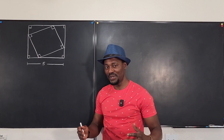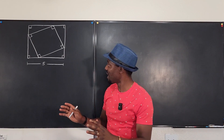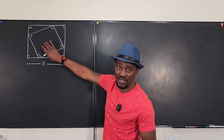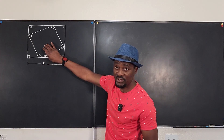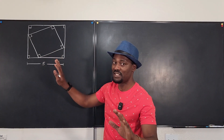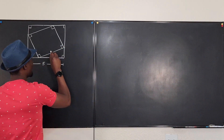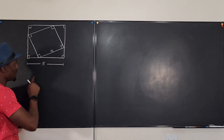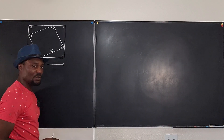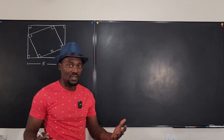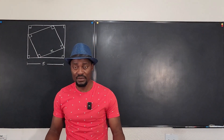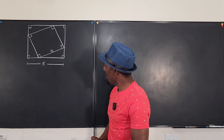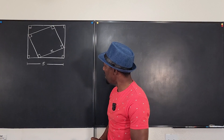The first thing to do is set up everything you know. We don't know the size of the inner square, so I'll give it a side length x. The outside square has a side length of five.